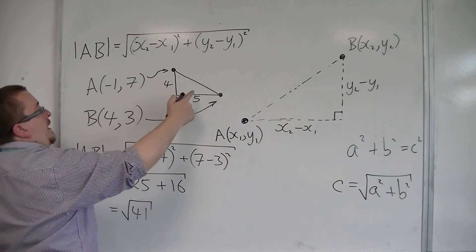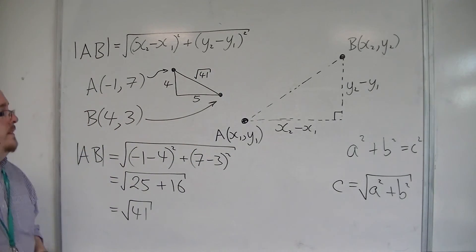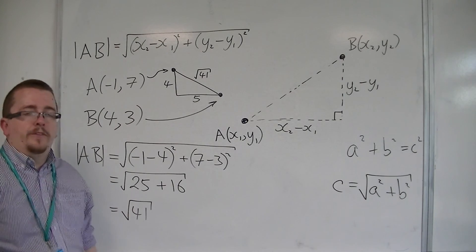So 4 squared plus 5 squared, square root, will be square root of 41. So if you want to draw a little diagram of a triangle, then so be it.